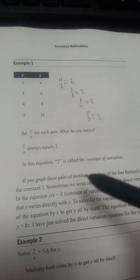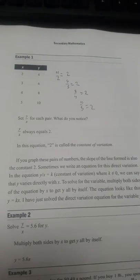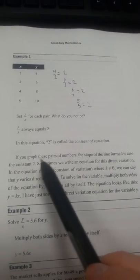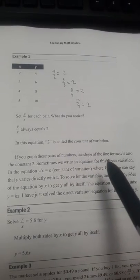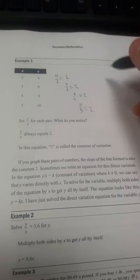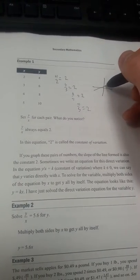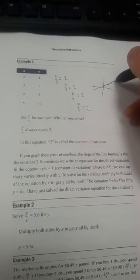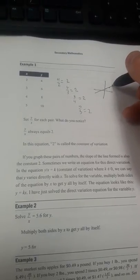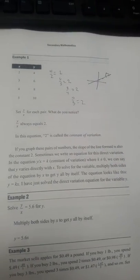And this equation, 2, is called a constant of variation. It talks about how if we graph these lines, the slope of the line formed is also a constant, 2. The slope of the line is going to look kind of like that, and it's going to be constant, and you're going to have points along the line. And the slope of the line will be 2, meaning you go up 2 for the y and over 1.